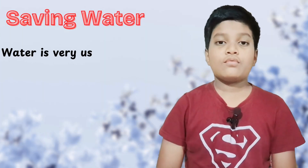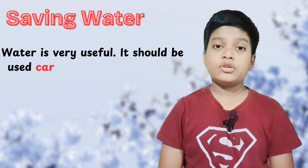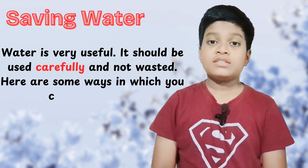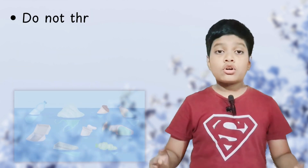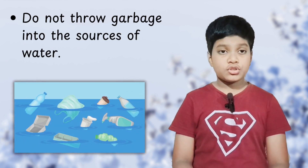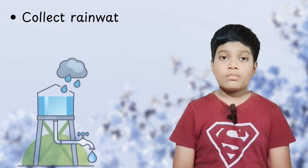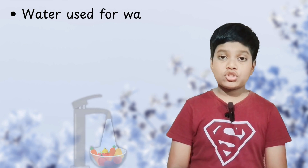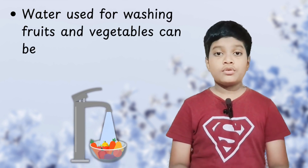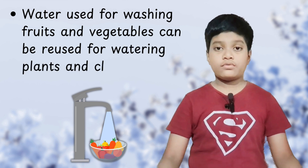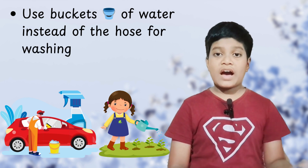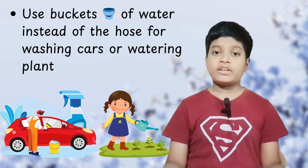Saving water: Water is very useful. It should be used carefully and not wasted. Here are some ways in which we can save water: Do not throw garbage into the sources of water. Collect rainwater from rooftops in tanks. Water used for washing vegetables can be reused for watering plants and cleaning floors. We should use buckets instead of hoses for washing cars and watering plants.